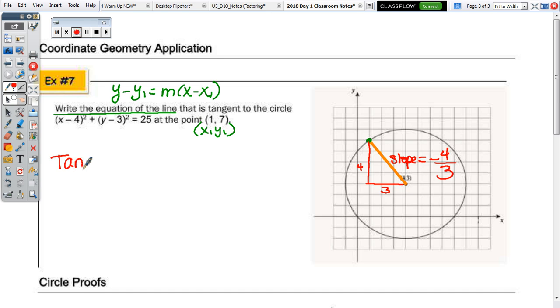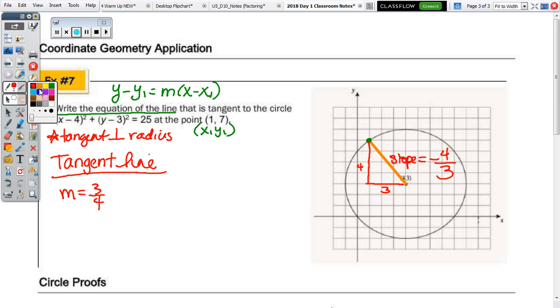Our tangent line is going to have a slope of what? Yeah, it's going to be 3 fourths because the tangent is perpendicular to the radius. And perpendicular lines have slopes that are negative reciprocals. So, it has this slope of 3 fourths and it's going to go through 1, 7. So, I'm going to use y minus y1. So, it's going to be y minus 7 equals 3 fourths times x minus 1.